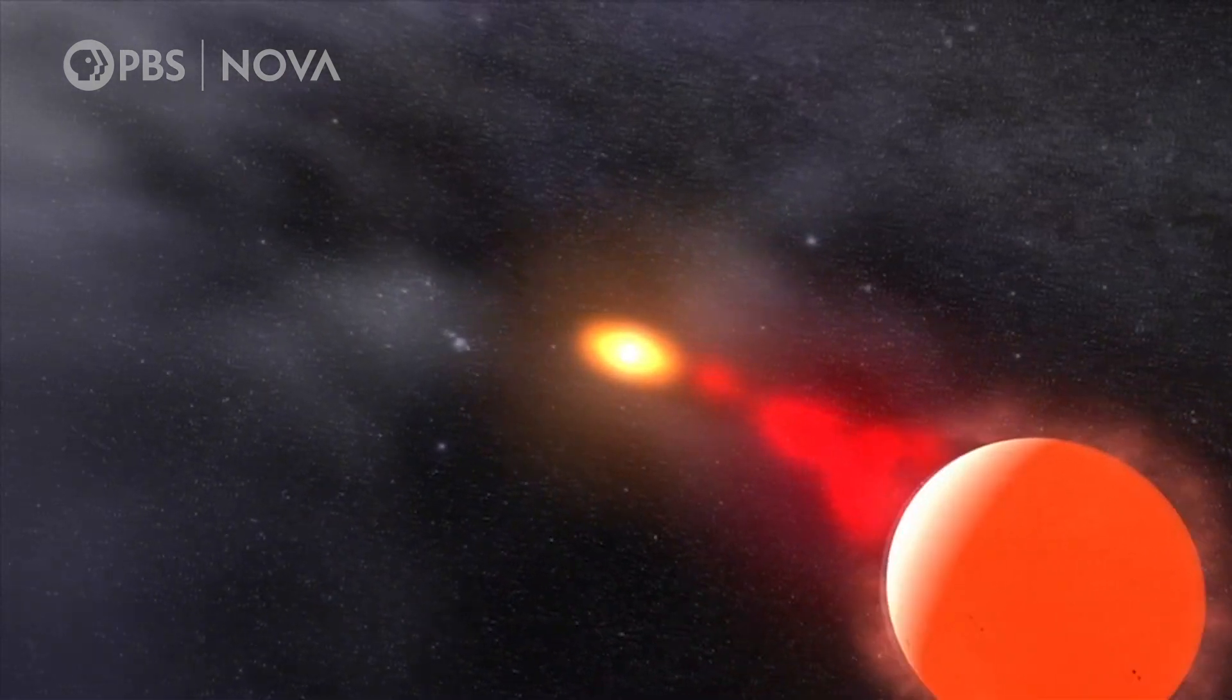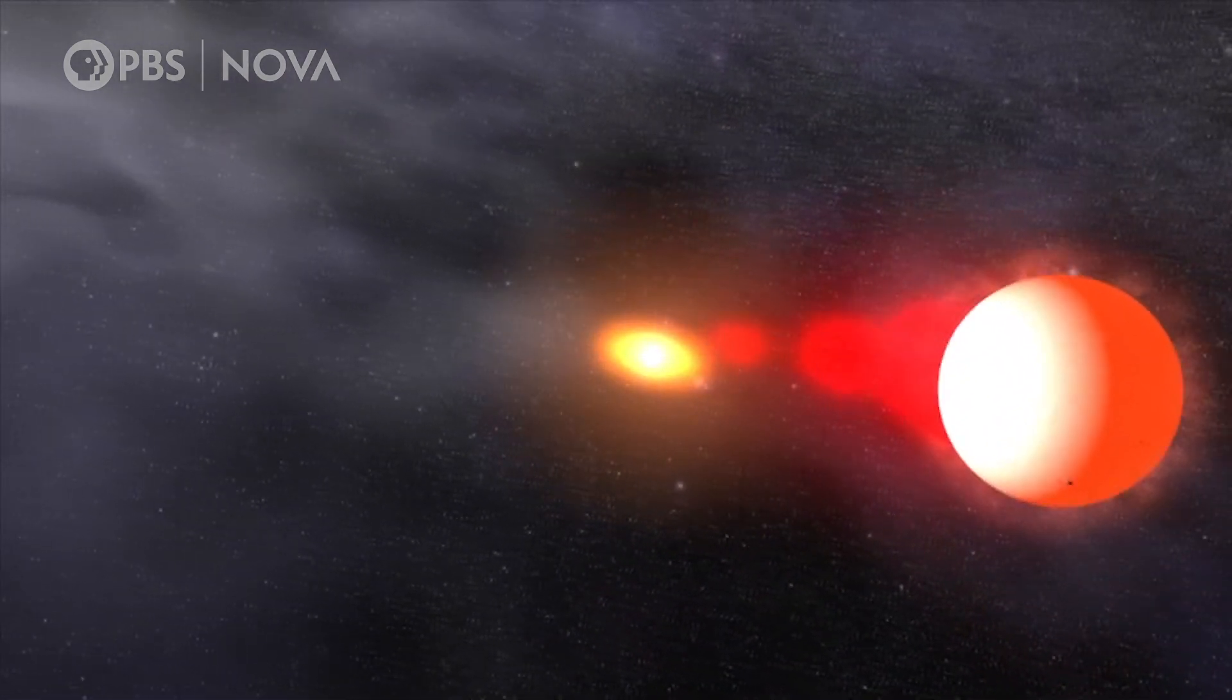TCRB is made up of two dying stars, a red giant and white dwarf, that orbit each other closely.